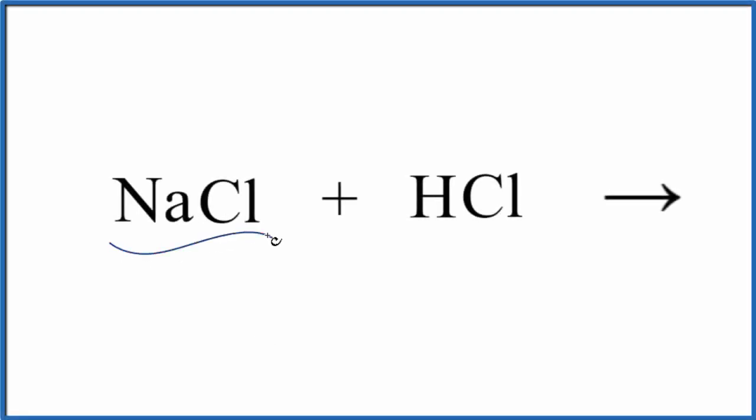So if we put NaCl and HCl together, we want to know what happens if there's a reaction that takes place. So sodium chloride, and this is hydrochloric acid, the strong acid.